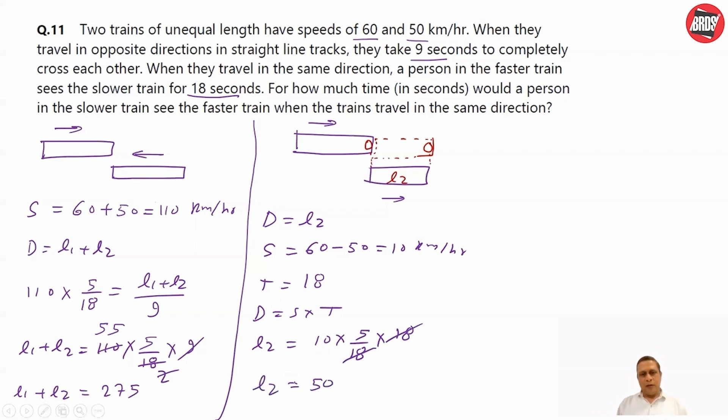So, once you get L2 equals 50 and L1 plus L2 equals 275, we can get L1. L1 is equal to 275 minus 50 equals 225. Now, we know length of both the trains: 225 and 50.